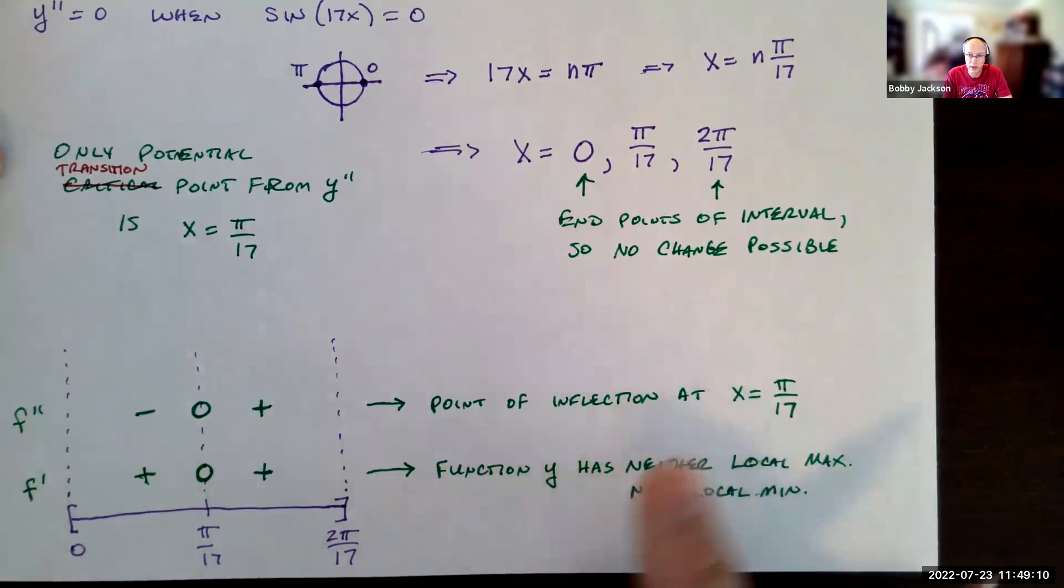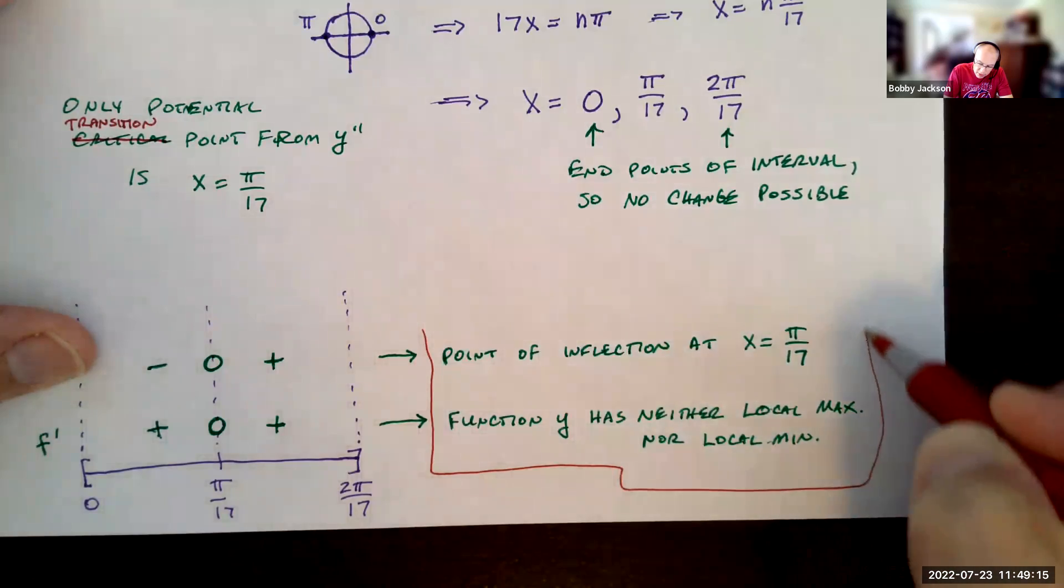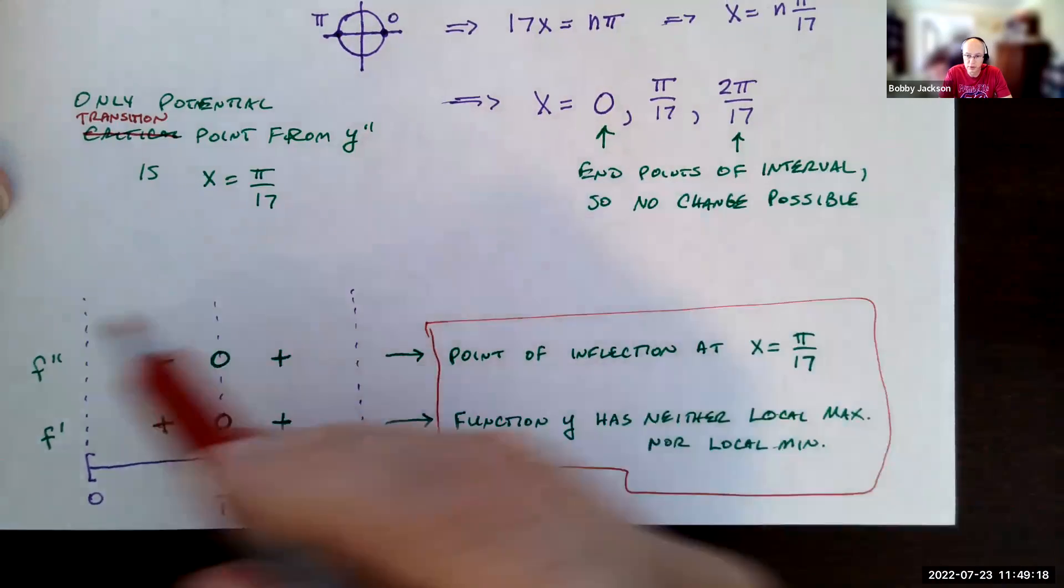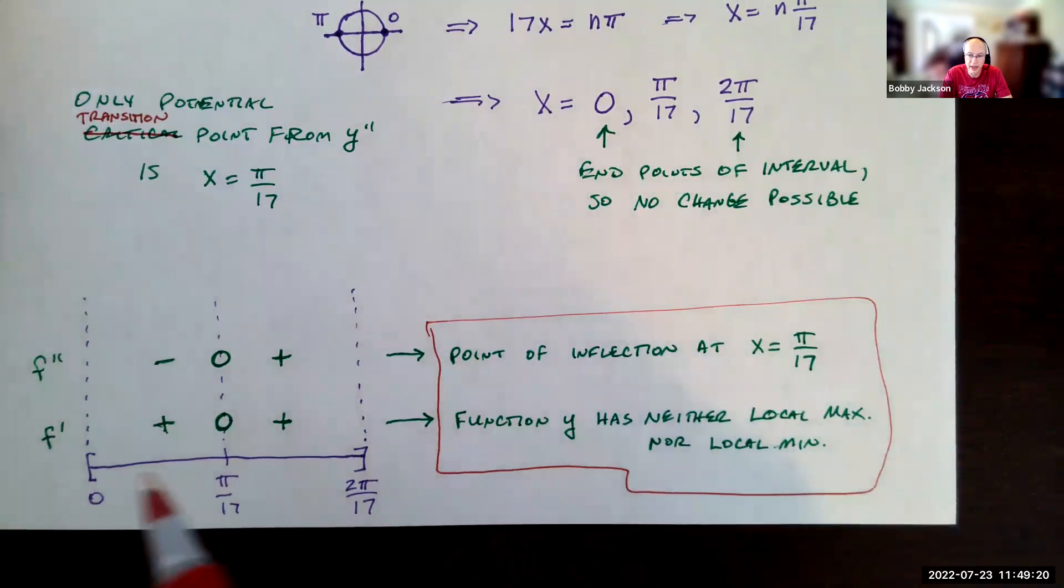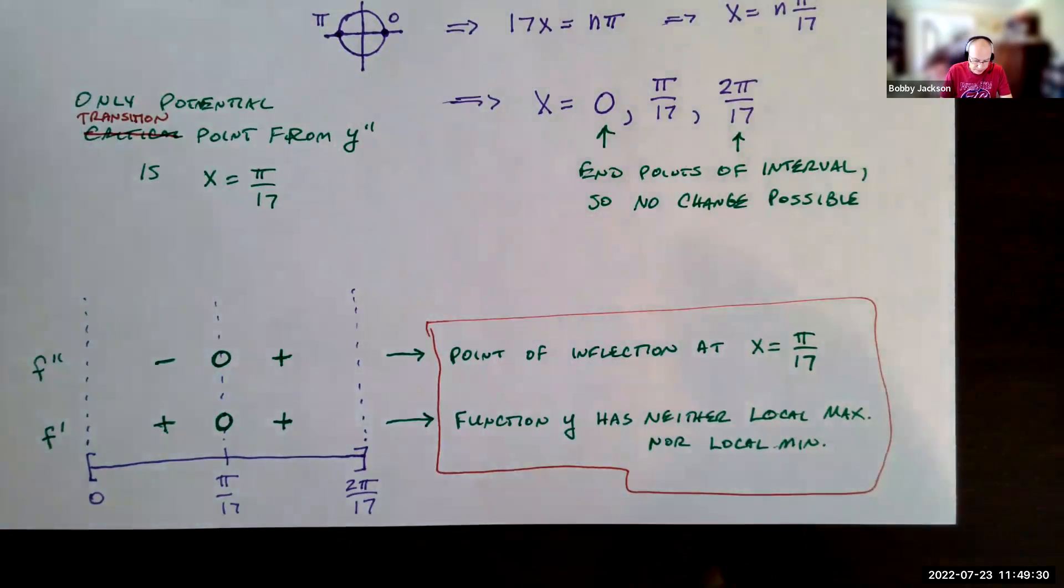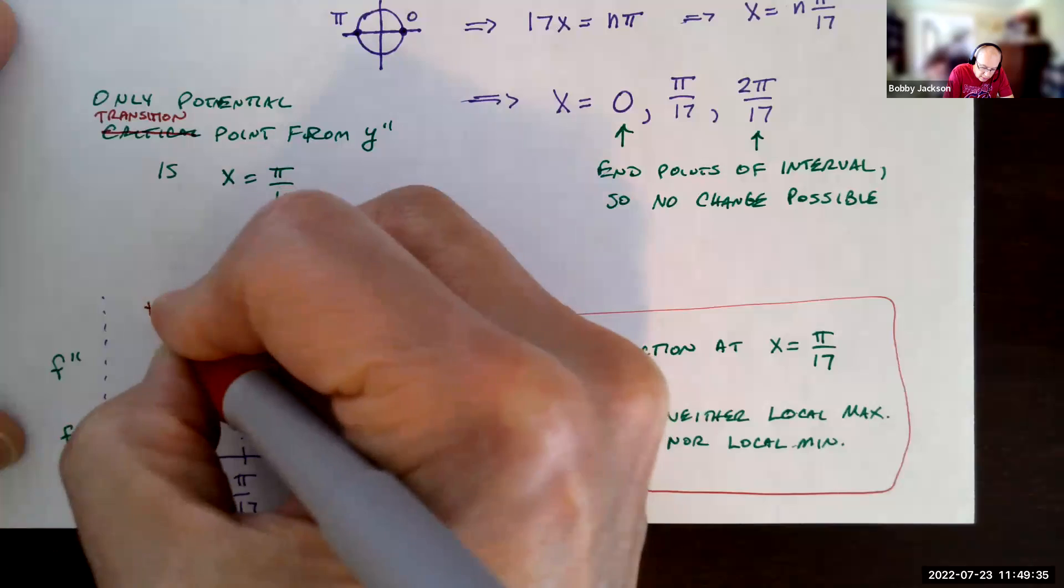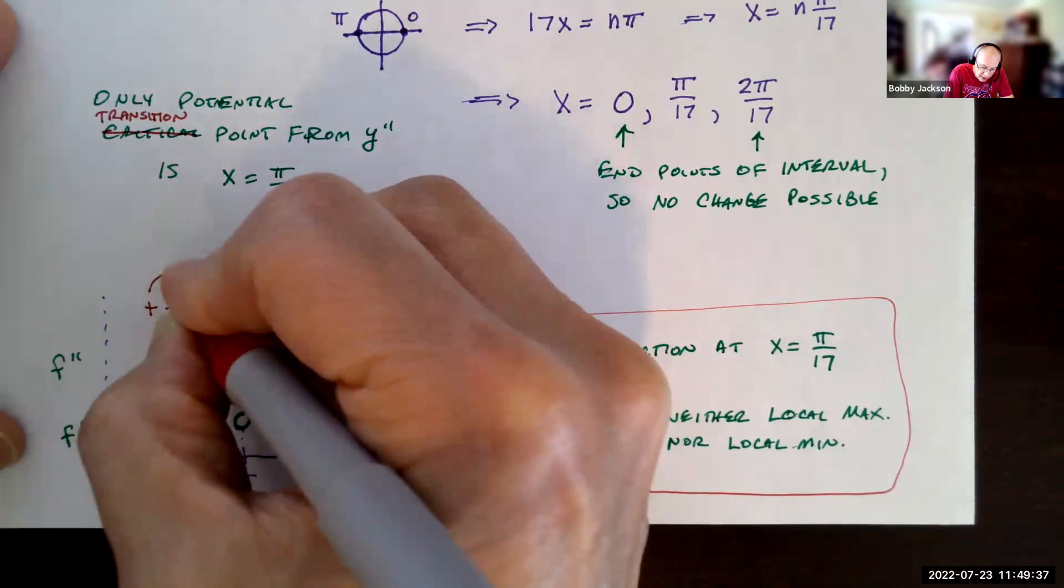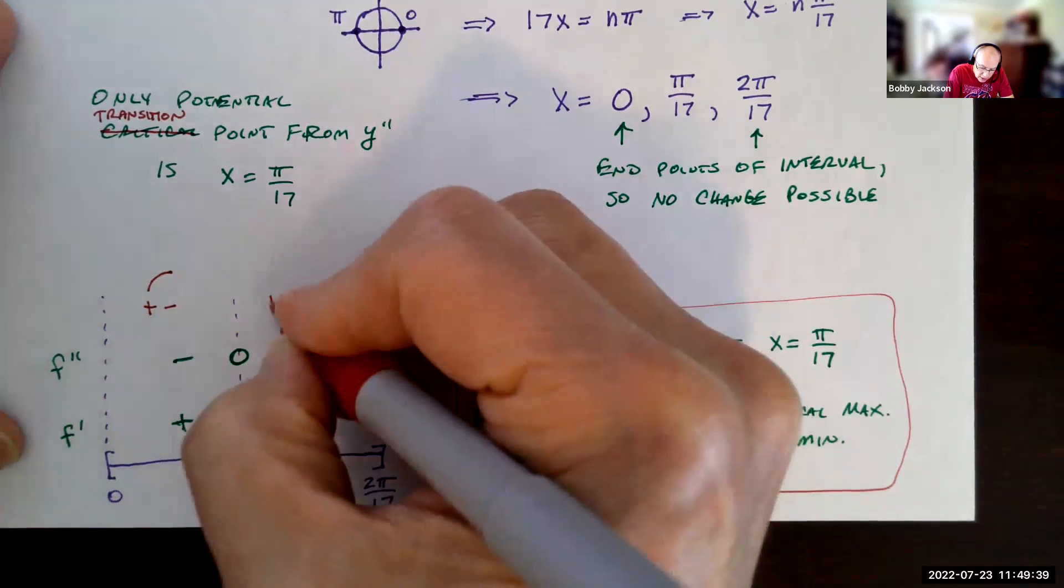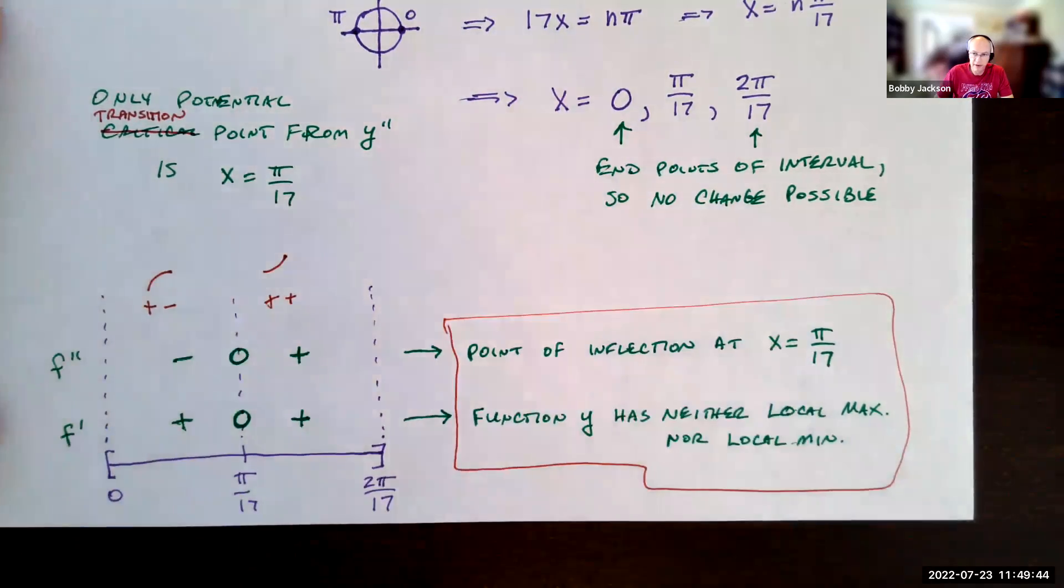That's all the information this problem is asking for, but it's important that you understand how you're going to show support on the test, which is going to be certainly a sign check. I want to look at what this function is looking like. Basically, the shape of the graph from 0 to π/17 is plus minus, which is increasing concave down, and then it's plus plus, which is increasing concave up. And so that's the graph on the interval.